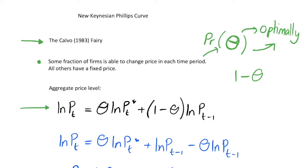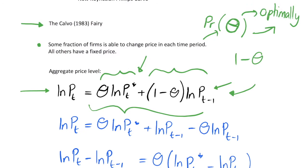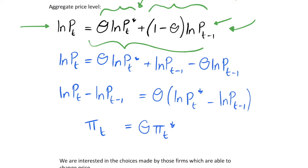What does this mean for our aggregate price level? If we look at the natural log of the price level, there's going to be a portion theta of firms choosing their price level optimally — we call that pt star — and then 1 minus theta firms still have the price level from the previous period, pt minus 1. Our aggregate price level is just a weighted average of these values, because we have identical firms, so we can aggregate such that all firms either choose pt star or keep the previous period's price.